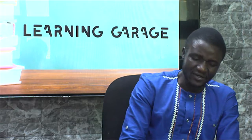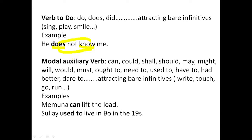Another kind of auxiliary verb is modal auxiliary verb: can, could, shall, should, may, might, will, would, must, have to, need to, used to, had better, dare to. We call these modal verbs. Can — present tense; past tense of can is could. Shall — past is should. Will — past is would.